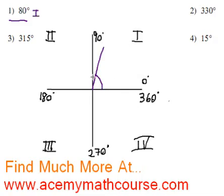What about 330 degrees? Starting at zero we pass 90, we pass 180, we pass 270 and we almost reach 360. So that's in the fourth quadrant, quadrant number four.